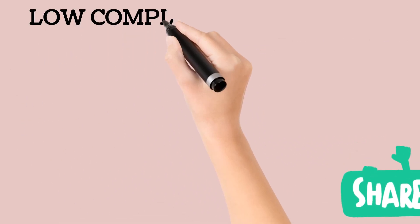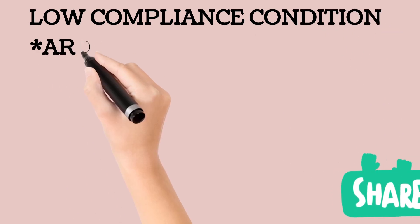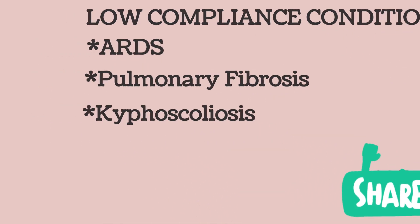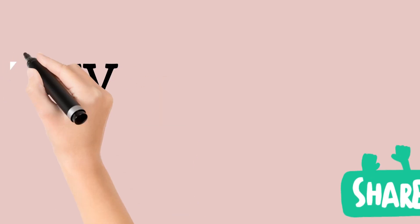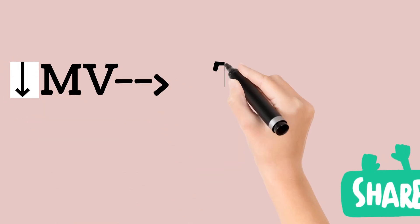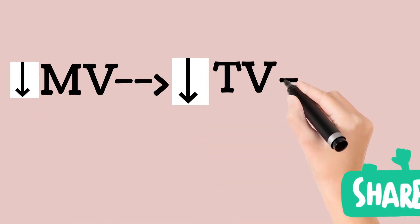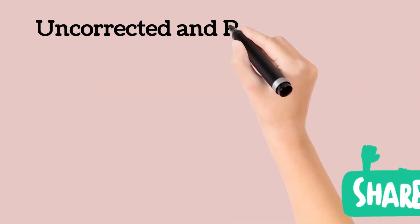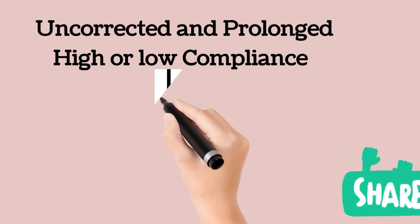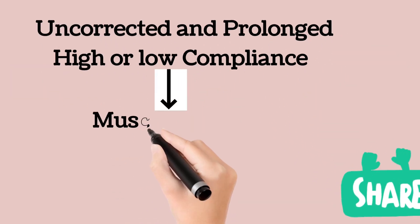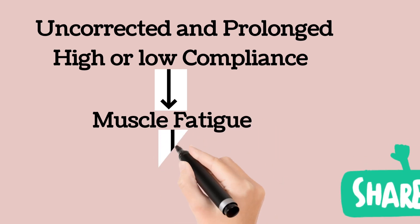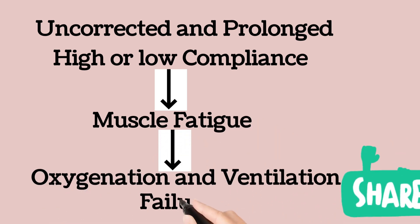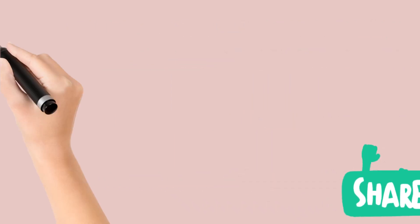In low compliance situations such as ARDS, pulmonary fibrosis, and kyphoscoliosis, the decrease in minute ventilation is characterized by decreased tidal volume and increased frequency. When abnormally low or high compliance is uncorrected and prolonged, muscle fatigue may occur and lead to the development of ventilatory and oxygenation failure.